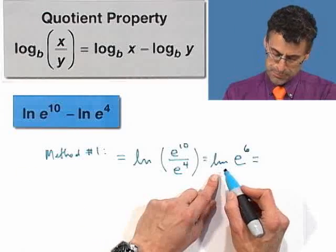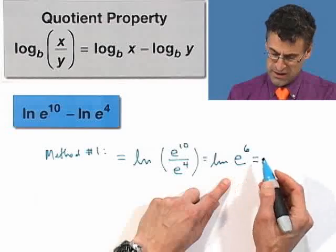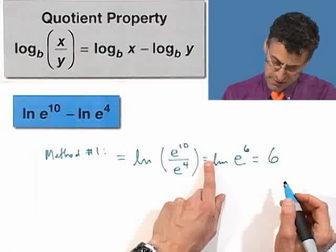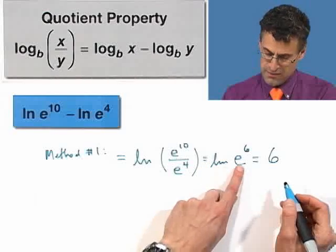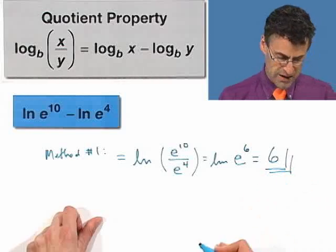You can do this in a variety of ways. You can just think about it. Natural log is the log base e. So what's the exponent on e to make it equal e to the 6th? Well, that equals 6. Or you can take the exponent, pull it out in front, and write this as 6 natural log of e. Natural log of e is 1, so it's 1 times 6. Anyway, the answer is 6. So that's one way of doing it.